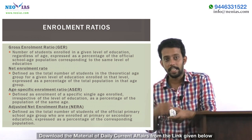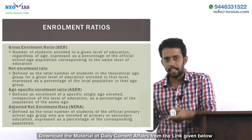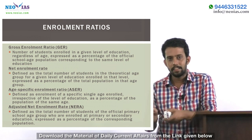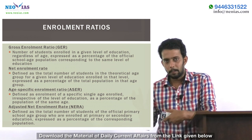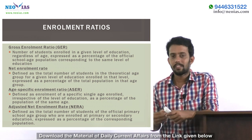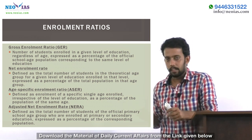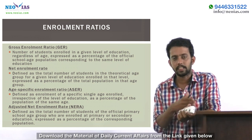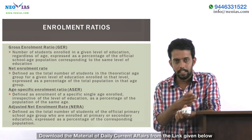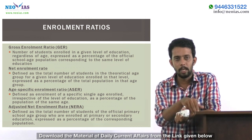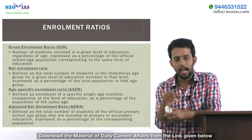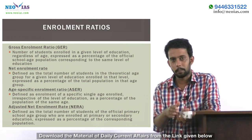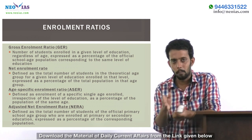Suppose the parents of student A actually enrolled him into education at a lower age, like age four, so he'll be in Grade 2 at age six. There can be issues of students returning at the same level, and issues of overage and underage students. If a student is enrolled by his parents at age seven, he'll be studying Grade 1 at age seven and reaching Grade 2 by age eight. So Gross Enrollment Ratio cannot be used as an accurate method.